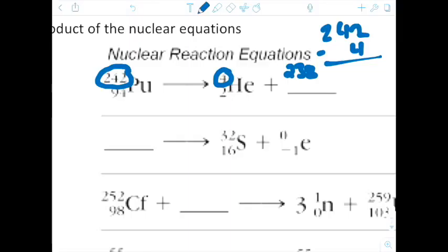Then on the bottom, we see the atomic number also has to match. So we have 94. We already have 2 over there, so 94 minus 2 gives us 92. Now to find the symbol or what the element actually is, it's 92 protons, which is uranium.